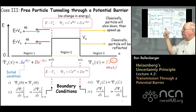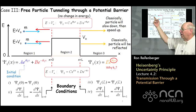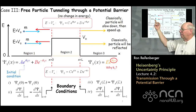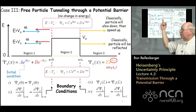We're going to consider two cases. First, a particle of mass M incident on this barrier moving from left to right when the energy E of that particle is greater than V0. The other case is when the energy of the particle is less than V0 — so this quantum particle is striking the barrier at an energy below the height of the barrier.